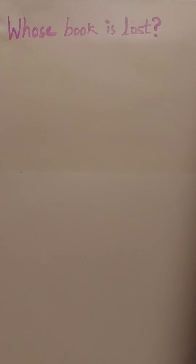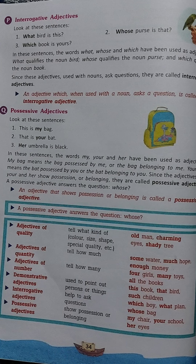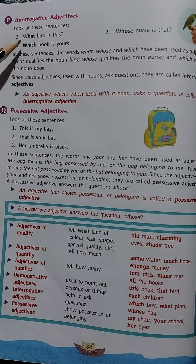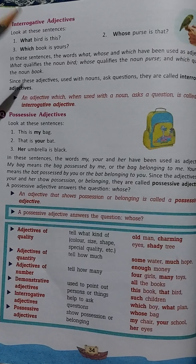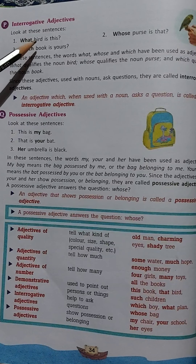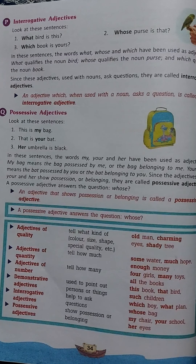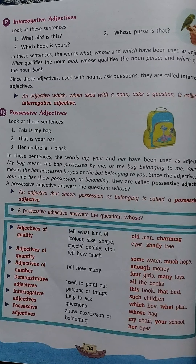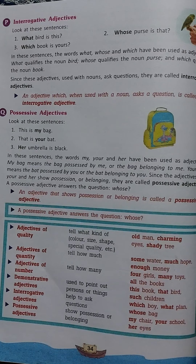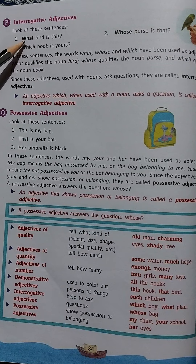Now let us look at some examples given in your book. The sentence here is: 'What bird is this?' In this sentence, 'bird' is a noun, and describing the noun bird is the word 'what'. So 'what' is a describing word here, and it is also posing a question as to what bird it is. So 'what' is an interrogative adjective.